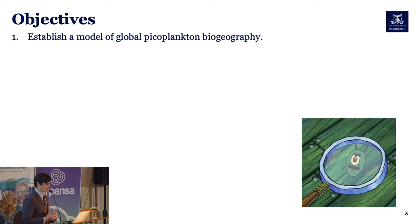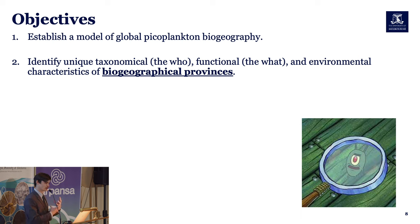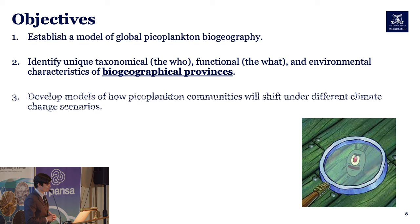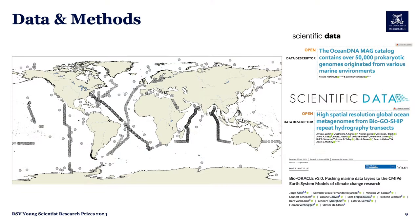Our work tries to establish a model of global picoplankton biogeography using the tools of metagenomics, and to investigate how climate change may be influencing that distribution. First, we define this global model of picoplankton biogeography. Second, we identify the unique taxonomical — the 'who' — and functional — the 'what' — characteristics of these biogeographical provinces, along with the environmental makeup that comprises them. Third, we develop models of how picoplankton communities will shift under different climate change scenarios.